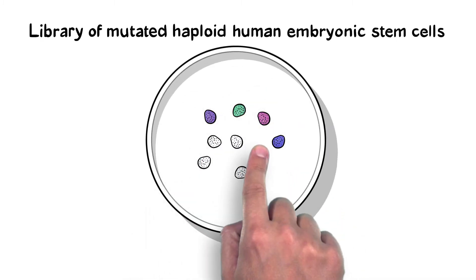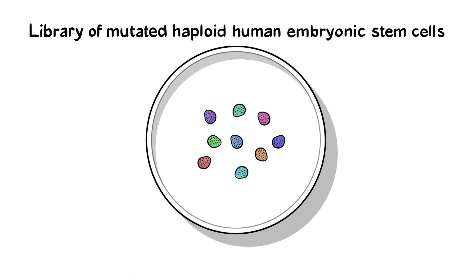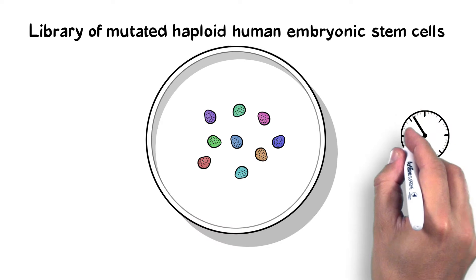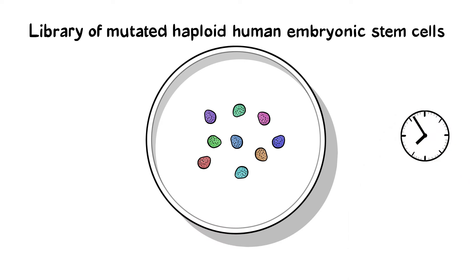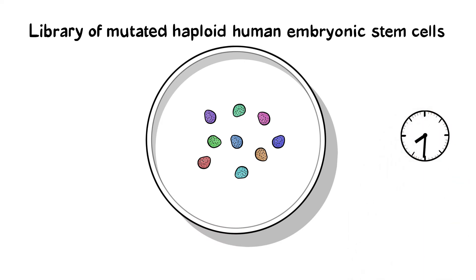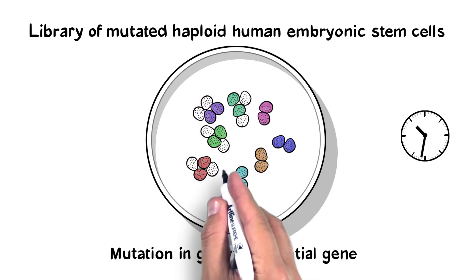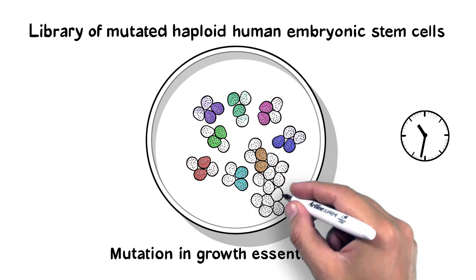Our library of mutated haploid human embryonic stem cells and our advanced analysis of its composition over time allows us to detect mutations that either become eliminated, indicating the mutation occurred in a gene that's essential for cell growth,